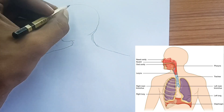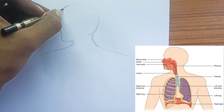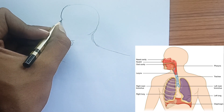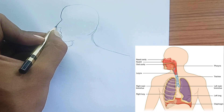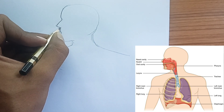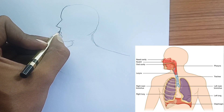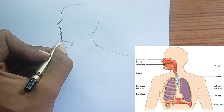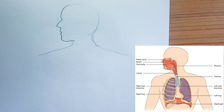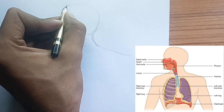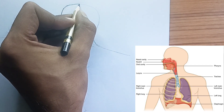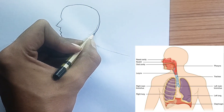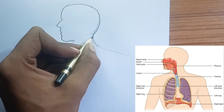The journey of air. Nose and mouth: Air typically enters through your nostrils, where tiny hairs and a sticky mucus lining trap dust and other particles. The air is also warmed and moistened here. You can also breathe through your mouth, especially during strenuous activity or when your nasal passages are blocked.